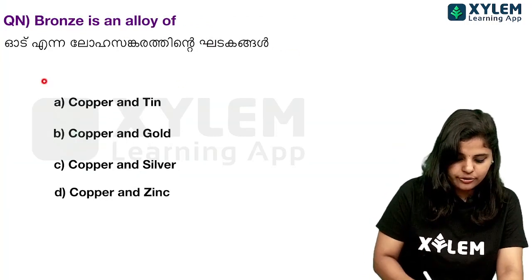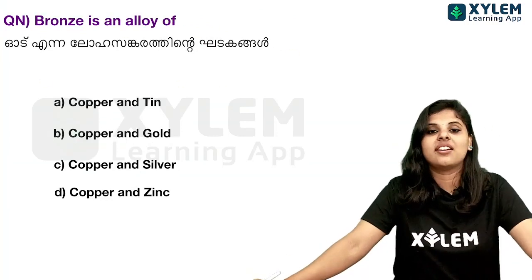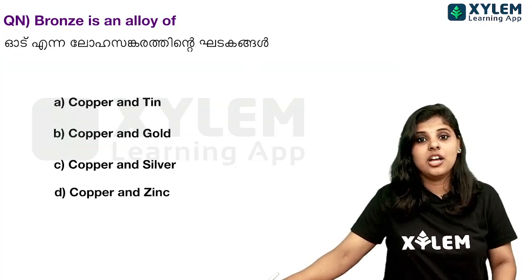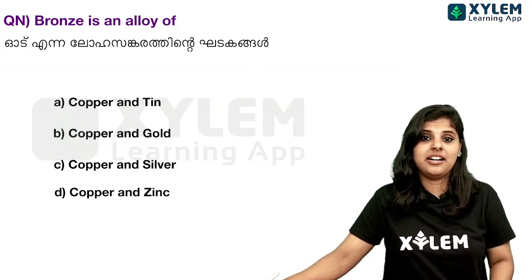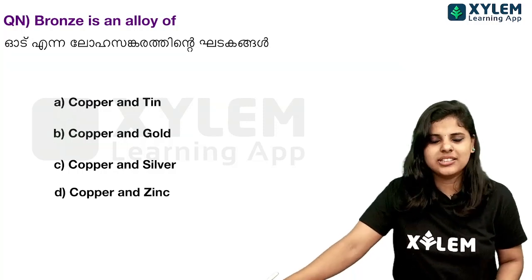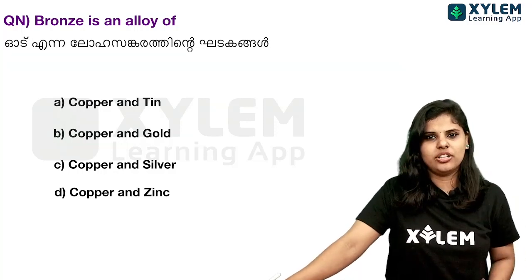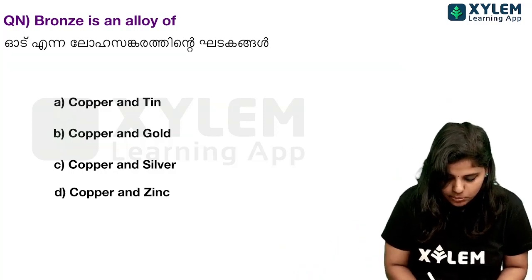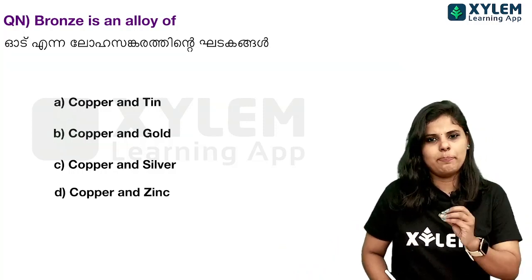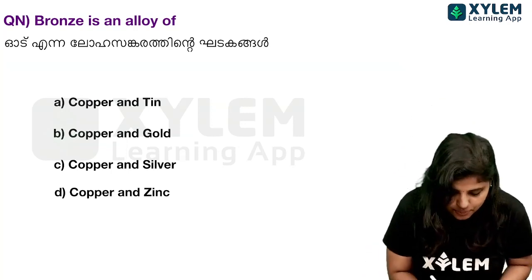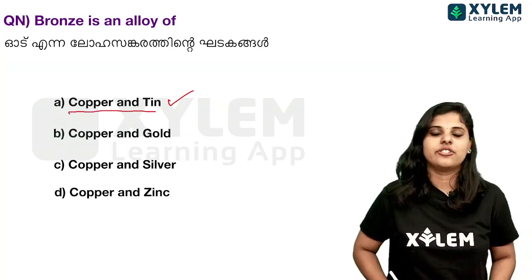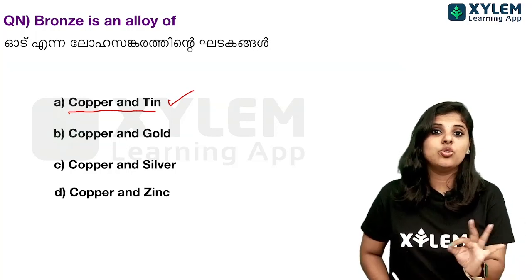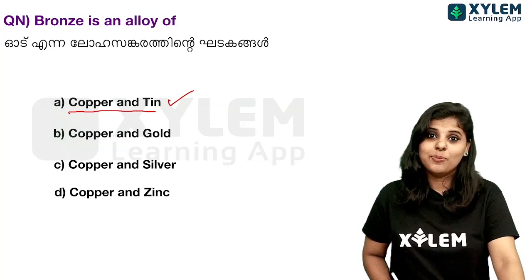Next question: Bronze is an alloy of what? We already discussed brass, bell metal, and bronze. Bronze is copper and tin. Copper combined with tin forms bronze. So the answer is copper and tin.